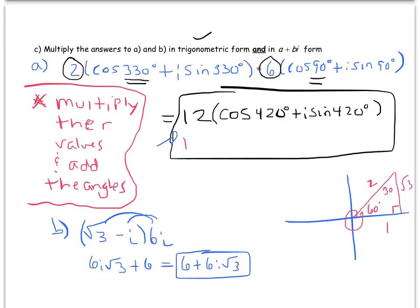And so this is equal to 12 times cosine of 420, which in the picture would be 1 over 2, plus i times sine of 420, or in other words the sine of 60, which is √3 over 2.